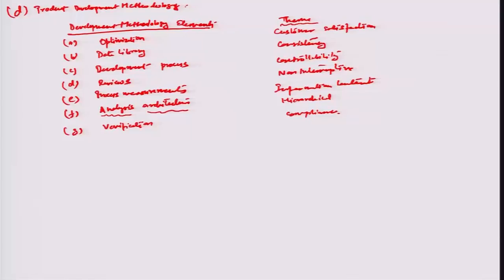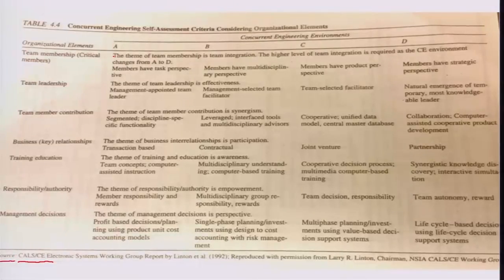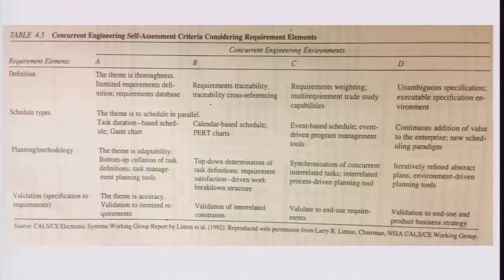The different elements — like communication, requirements, or product development methodology — also have further categorizations into levels A, B, C, D depending on the available complexity in each. This has been taken from the CALS electronic systems work group report as the source. Just as we did for organizational elements in the last slides and categorized them into various levels, we are going to do the same for the requirement elements.